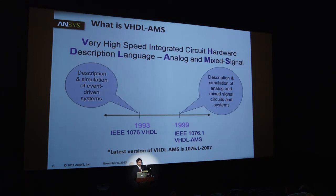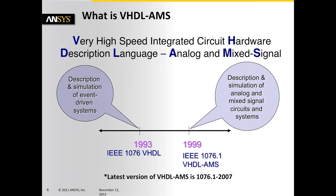VHDL-AMS is an IEEE standard — it stands for Very High-Speed Integrated Circuit Hardware Description Language with Analog and Mixed Signal extensions. The origin was in VHDL, the discrete event simulation language for digital systems, and the analog and mixed signal extension was added in 1999 and has been continuously revised since then. It's similar to Modelica in terms of developing models: you can write simultaneous equations, write functions, reuse models, and use hierarchy. The most recent version is 2007, with another version being discussed for release in the next two or three years.